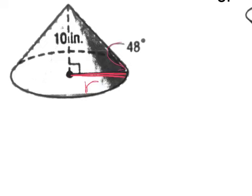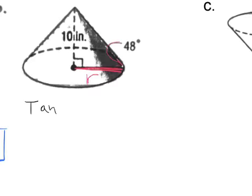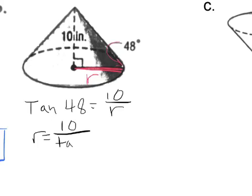And so that's tangent of 48 equals the opposite, which in this case is 10, over the adjacent, which in this case is R. And we can just switch these two. We learned that a while back. So we would get that the radius is 10 divided by tangent 48. And then when you plug that in your calculator, you should get something like 9.004. So 9 is a pretty good estimate of what the radius is, 9 inches. But we can use 9.004 just to be a little bit more precise.